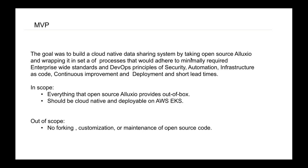The MVP goal was to build a cloud-native data sharing system. We wanted to put effort into mitigating these issues and streamline the process of accessing and processing data. The goal was to take open source Alluxio and wrap it in a set of processes that would adhere to minimally required enterprise-wide standards and DevOps principles: security, automation, infrastructure as code, continuous improvement and deployment, and short lead times. We called it an MVP because we wanted to go with a DevOps mindset — rolling out basic features, getting feedback, and continuously improving through incremental development.